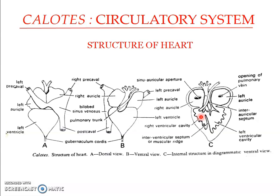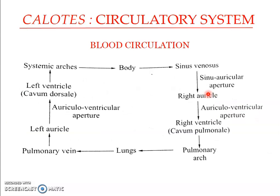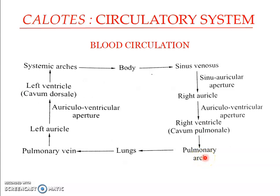Blood in the right part of the ventricle is pushed mainly into the pulmonary trunk, while blood from the left ventricular cavity is pushed into the systemic trunk. From various body parts, deoxygenated blood is carried through the precaval and postcaval veins to the sinus venosus, and through the sino-auricular aperture enters the right auricle, then to the cavum pulmonale of the ventricle, and then to the pulmonary arch to be taken to the lungs for oxygenation.